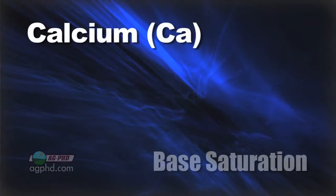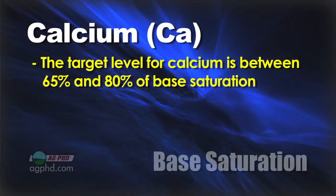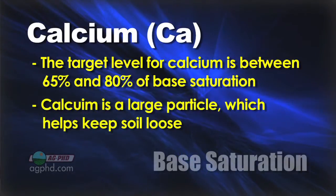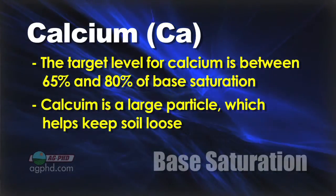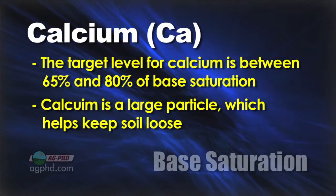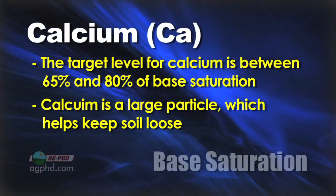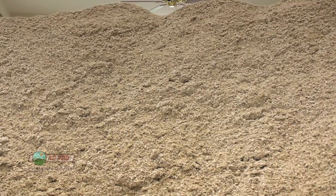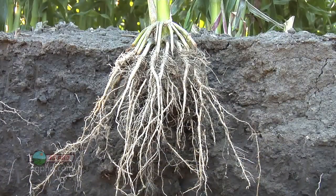First, let's look at calcium. This is the one we'd like to see at about 65 to even 80 percent of base saturation. Calcium is a large molecule, so when you have lots of calcium in your soil that's usually a good thing because it leaves breathing room around the particles. If you have a room full of beach balls you can still breathe because of the air around those big particles, but a room full of sand — tiny little particles — you won't be able to breathe. It's the same thing in your soil. That's why we like a lot of calcium.